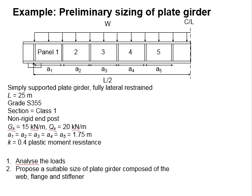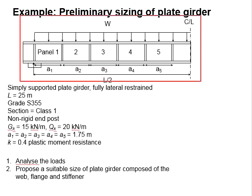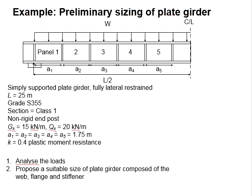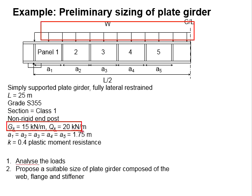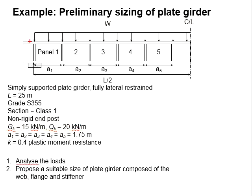Let's try an example to determine the size of a plate girder. This diagram shows a half section of a plate girder. The span is equal to 25 meters, it is made of steel grade S355. Assume that the section is class 1 and the conditions of the support is a non-rigid end post. It is subjected to a uniform distributed load of Gk = 15 kN/m and Qk = 20 kN/m.